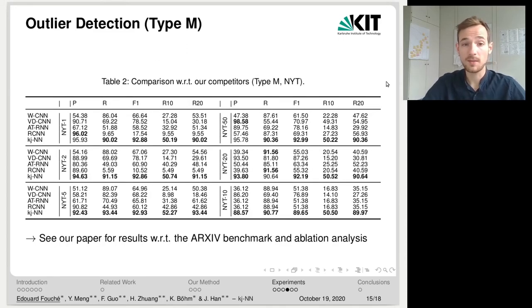With respect to type M outliers, it is interesting to see that our approach outperforms all its competitors with respect to all datasets and almost all measures. Please check out our paper for more extensive results, in particular with respect to the arXiv benchmark and we also provide an ablation analysis.